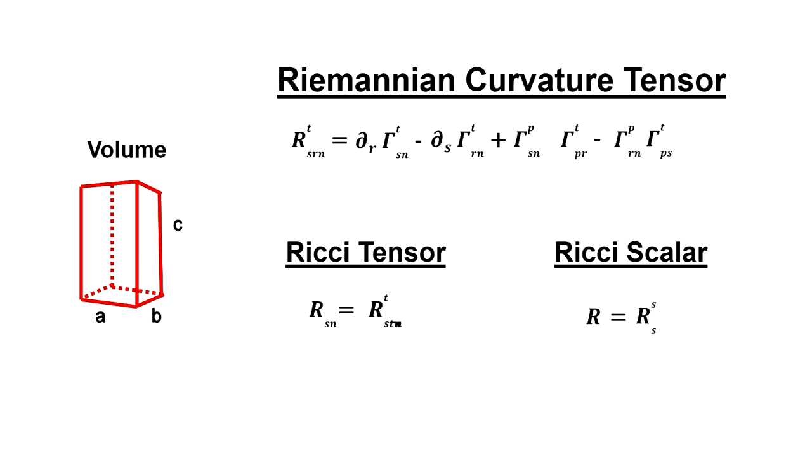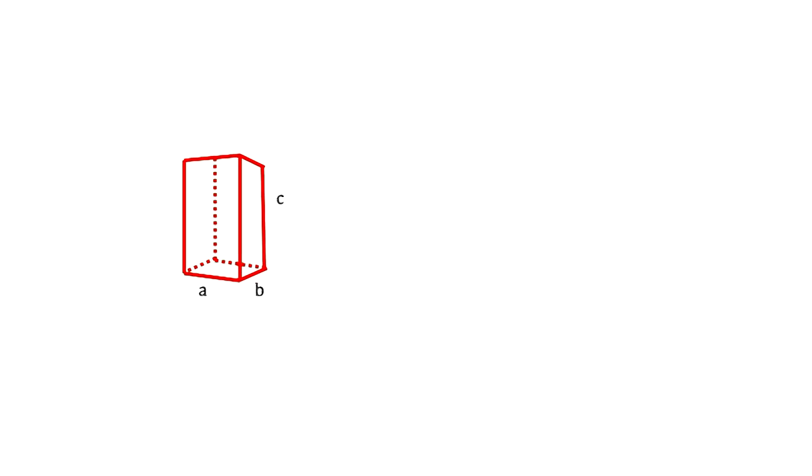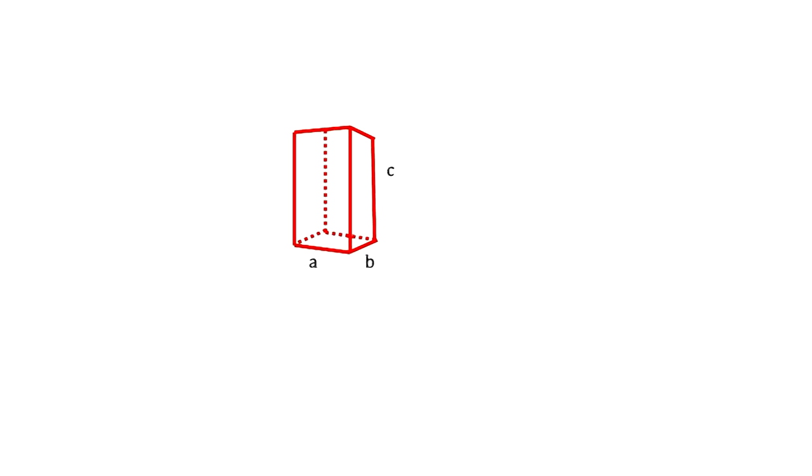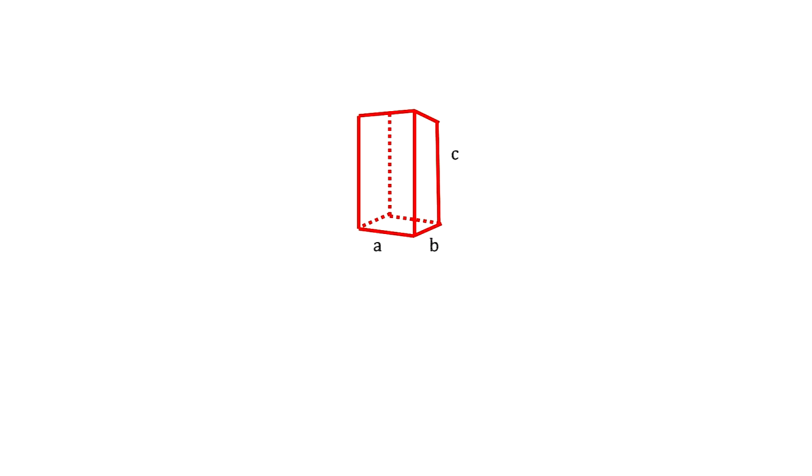Where Riemann gives us the curvature for every geodesic, Ricci gives us the average for a volume. With this, we can calculate the amount by which a volume deviates from what it would be in Euclidean space.